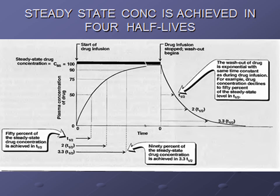Steady-state concentration is achieved after approximately 4 half-lives. When a constant dose of drug is repeated before the expiry of 4 half-lives, it achieves a higher peak concentration, because some remnant of the previous dose is still present in the body.